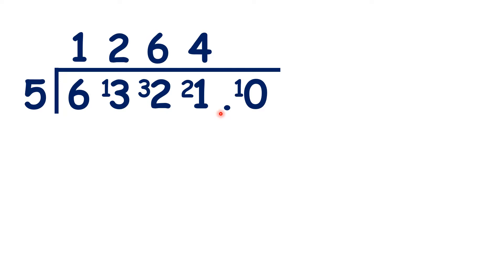So because we now have a decimal point in our question, we need to copy that decimal point up to our answer. And now we can do 10 divided by 5, which is 2.